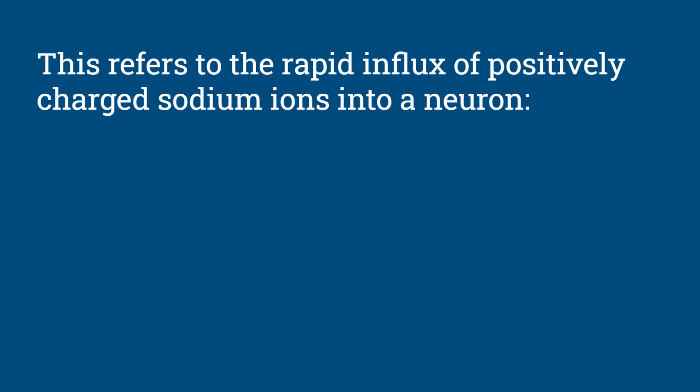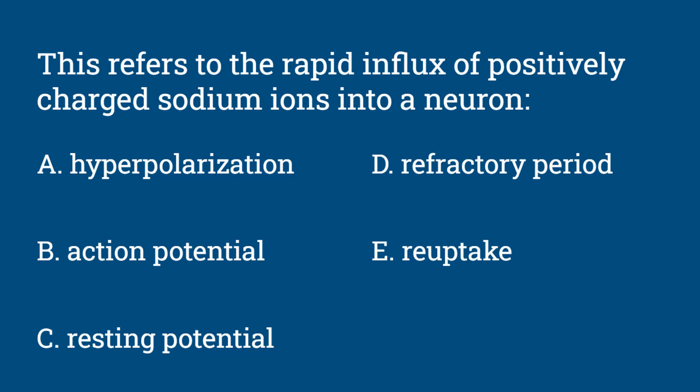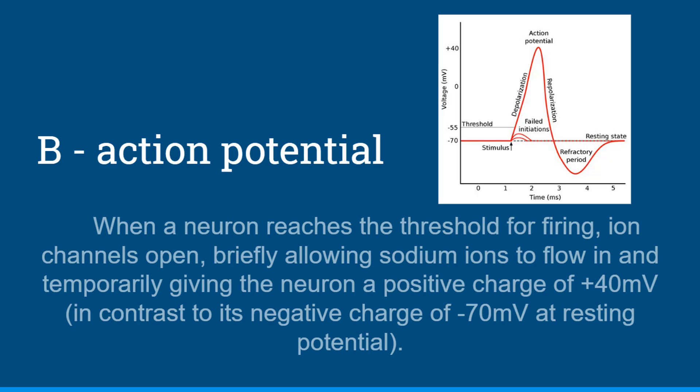Question 9: This refers to the rapid influx of positively charged sodium ions into a neuron. Is it hyperpolarization, action potential, resting potential, refractory period, or reuptake? The answer is B, an action potential. When a neuron reaches the threshold for firing, ion channels open and briefly allow sodium ions to flow in, temporarily giving it a positive charge of about +40 millivolts, in contrast to its usual resting potential of −70 millivolts.